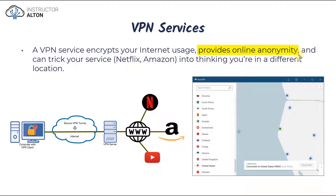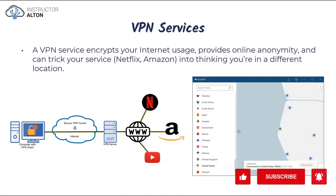VPN services also provide some additional benefits. Number one, they provide online anonymity — so you can't be tracked by your ISP. Number two, you can trick a service such as Netflix or Amazon into thinking that you're actually in a different location. The way that works is you connect your VPN client into a VPN server, and services like NordVPN have servers all across the world. Based on where you connect, that's where the service provider thinks you physically are.